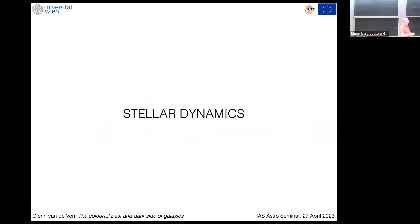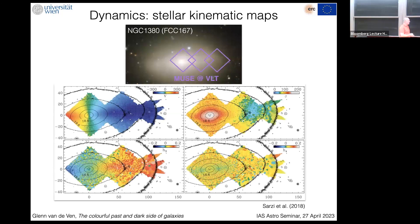Now for a completely different handle on galaxy assembly: we can also measure the motions of the stars — stellar dynamics. In addition to all the stellar population measurements for our pilot galaxy, we can also beautifully measure the line-of-sight velocity distribution expressed as moment maps: mean velocity, velocity dispersion, and higher-order moments — skewness (h3) and kurtosis (h4). These higher-order moments are essential for constraining what comes next: the orbital structure of the galaxy.